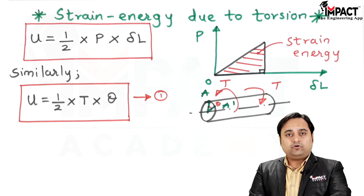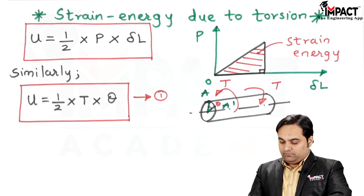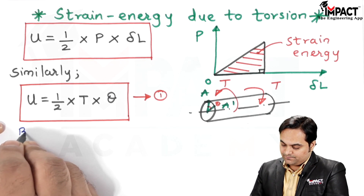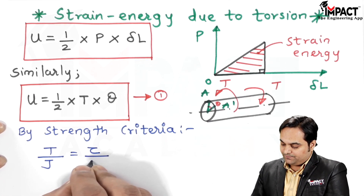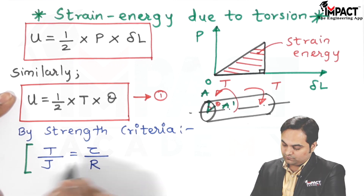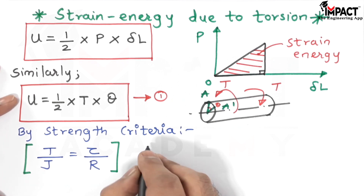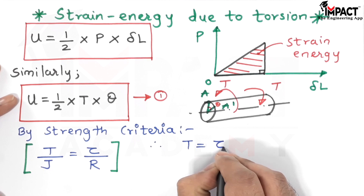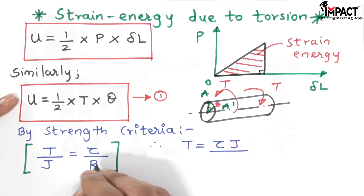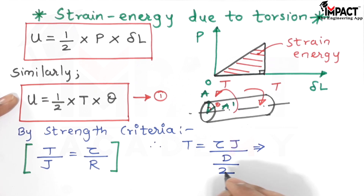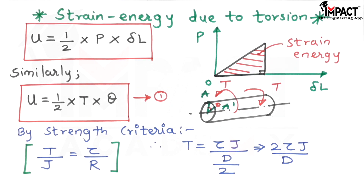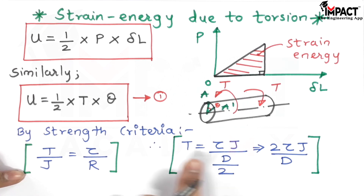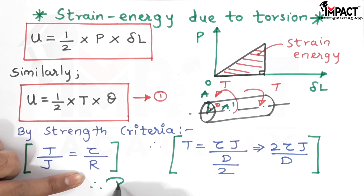We also know that for shafts subjected to twisting moment, by the strength criteria the formula is T/J = τ/R, where R is the radius of the shaft. Keeping T on one side, the formula becomes tau into J upon the radius of the shaft. Since radius is half the diameter, the 2 goes into the numerator, giving T = 2τJ/D. Putting this value of T in equation number 1, the formula changes accordingly.